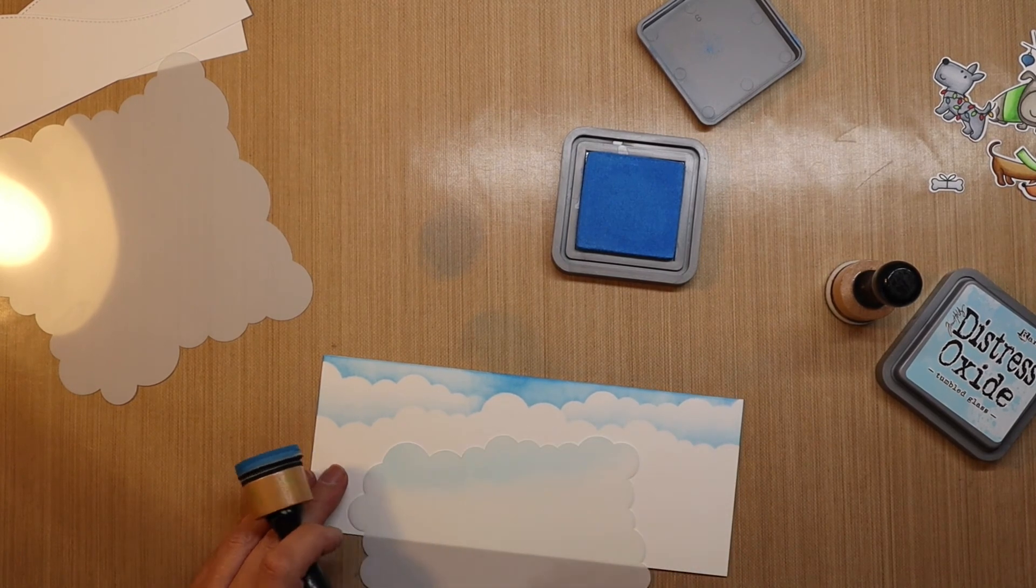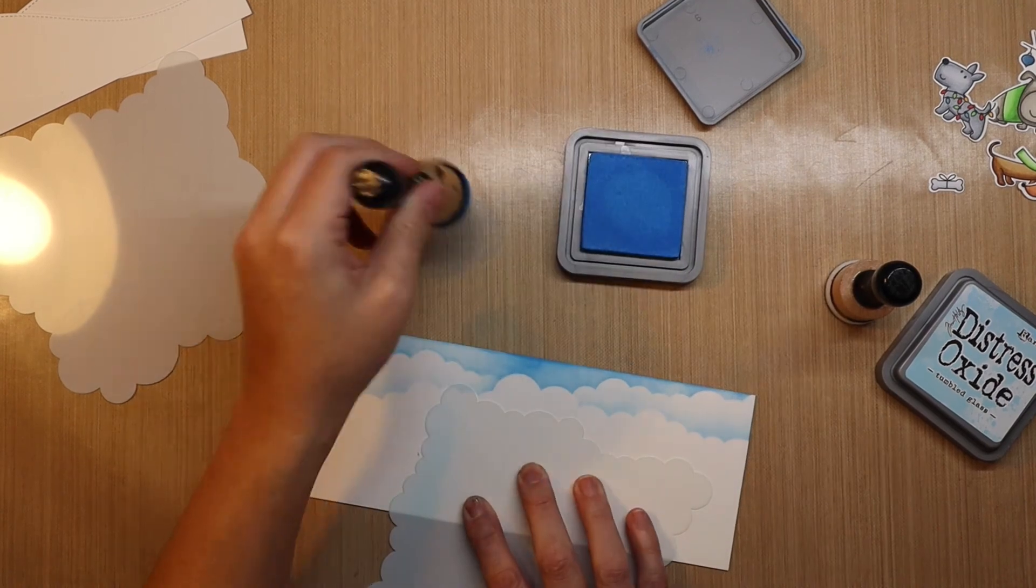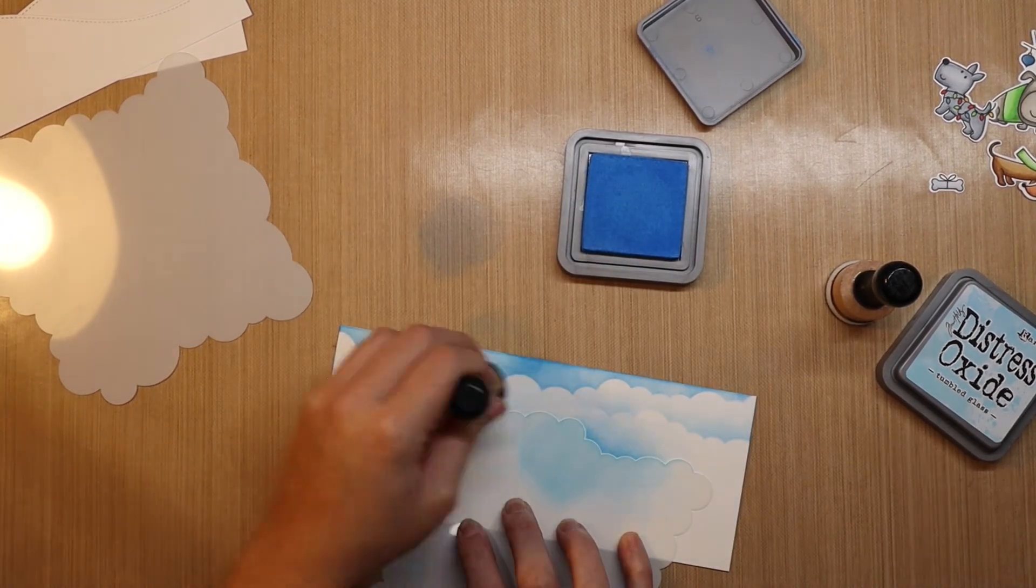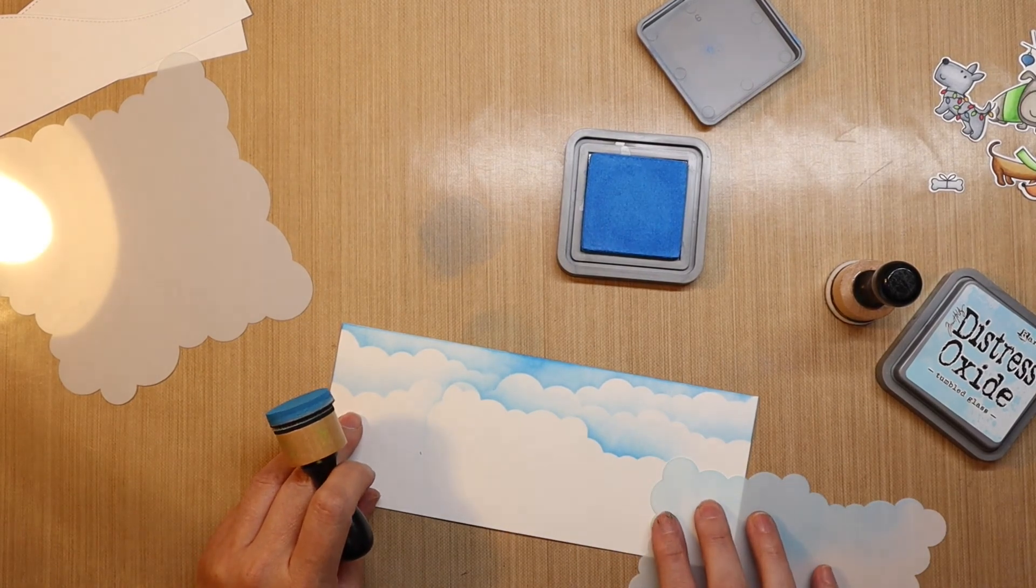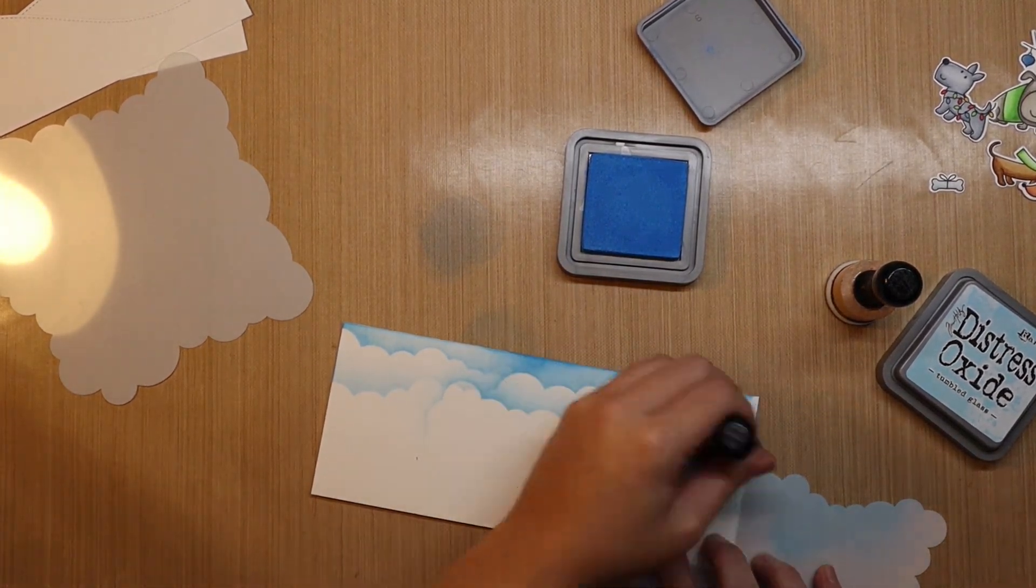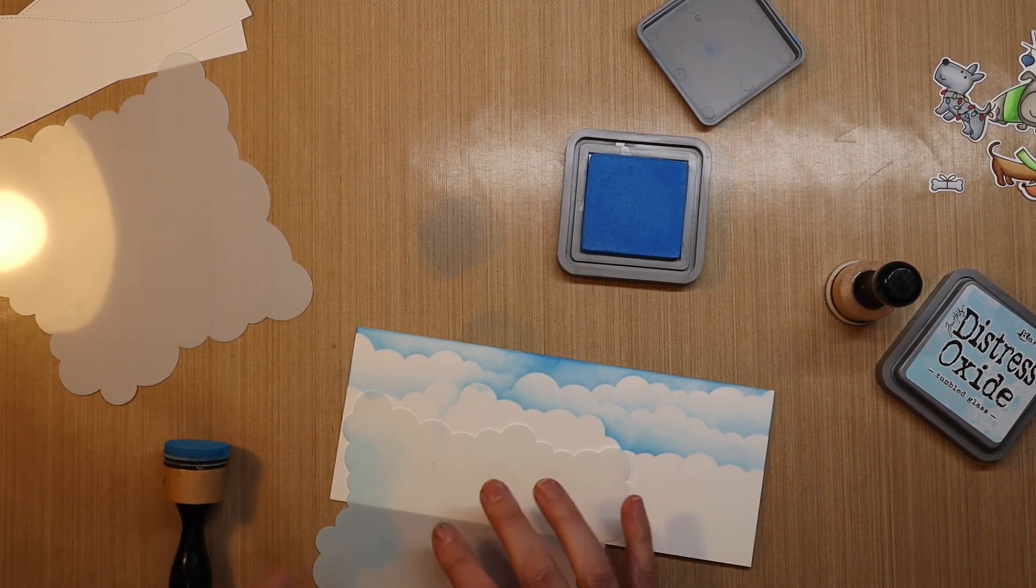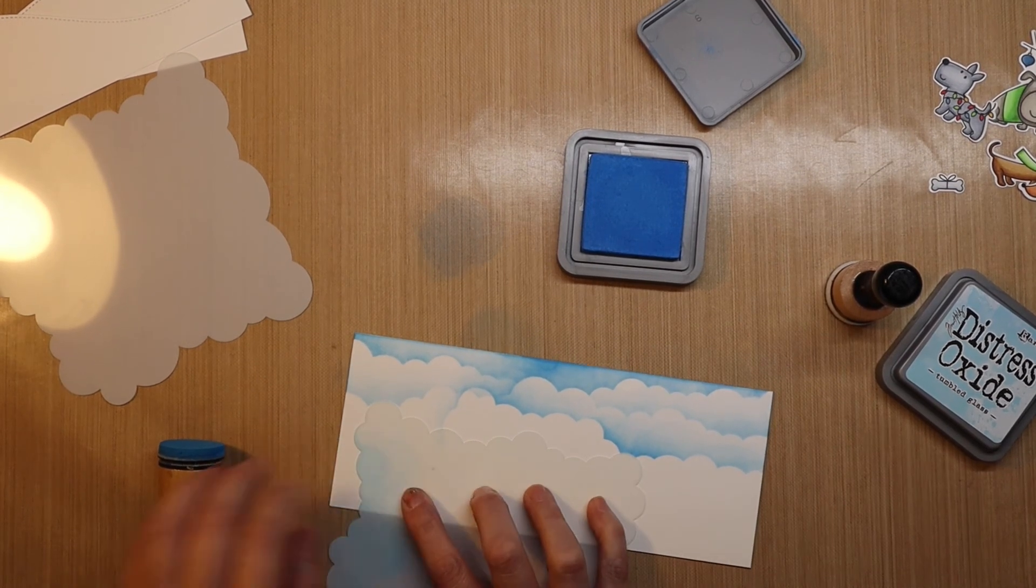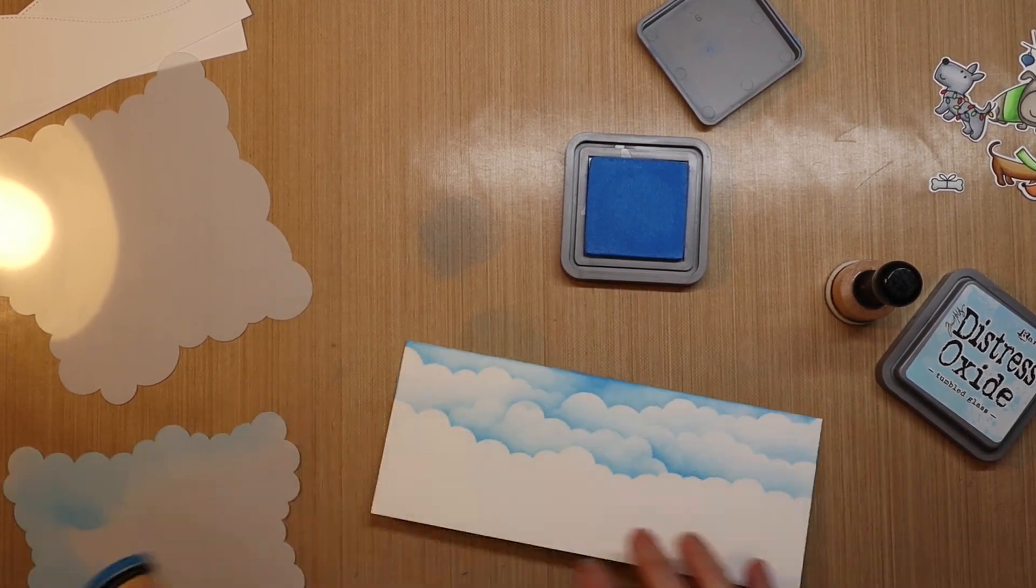I want these to be snowy banks. So I'm going to ink blend just along the top edges of the hillside borders that I trimmed, but I'm going to use a lighter blue, which for today I use tumbled glass. Both of these are distress oxide inks. I feel like they blend so easily. I almost always go to them when I want some ink blending.